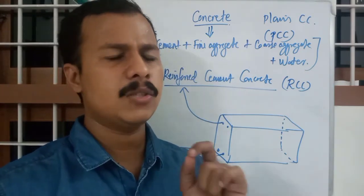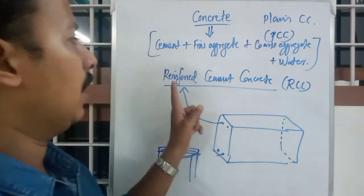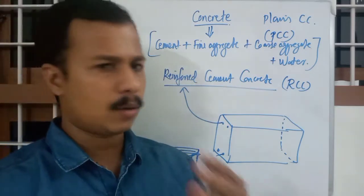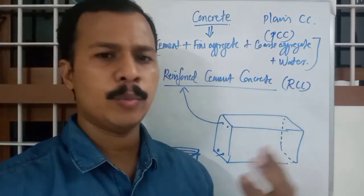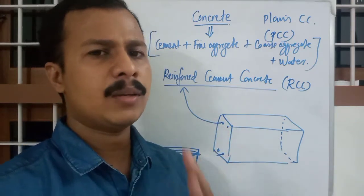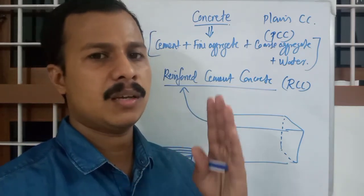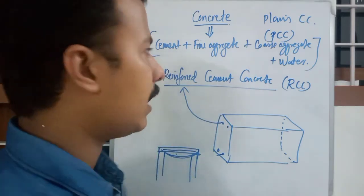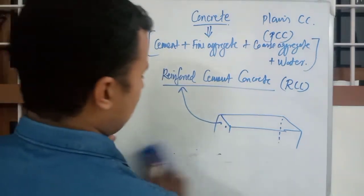Why steel? Why did we choose steel as reinforcement? Why not any other metal - copper, aluminum, iron, cast iron, pig iron, and there are so many varieties. Why not any other metals? Why steel? We will come to that.